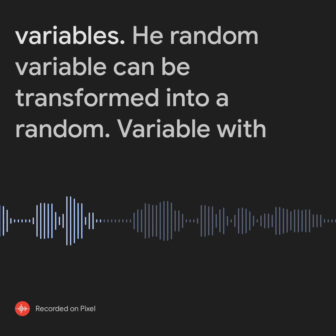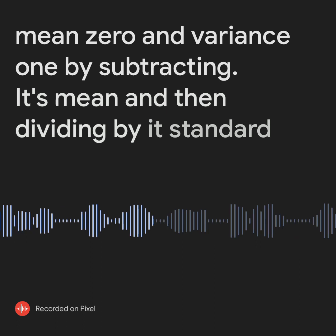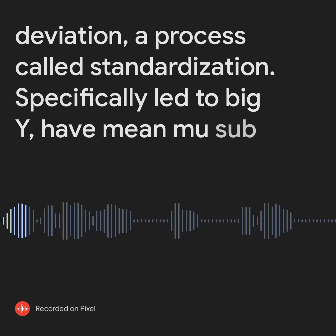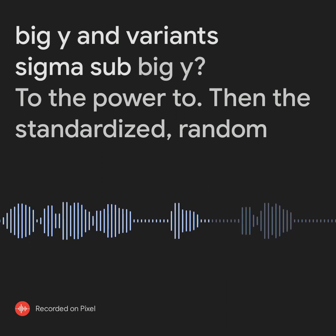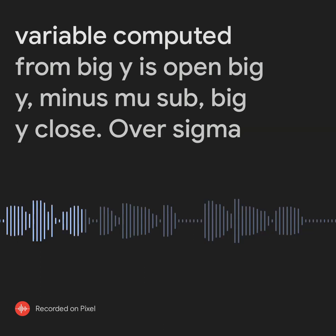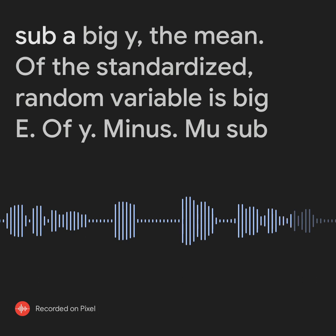A random variable can be transformed into a random variable with mean 0 and variance 1 by subtracting its mean and then dividing by its standard deviation, a process called standardization. Specifically, let Y have mean μ_Y and variance σ²_Y. Then the standardized random variable computed from Y is (Y − μ_Y) / σ_Y.